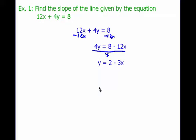I get y on the left. 8 divided by 4 is 2. 12 divided by 4 is 3. So I get y equals 2 minus 3x. And I want to rewrite it as y equals negative 3x plus 2. So now, this is in slope-intercept form.